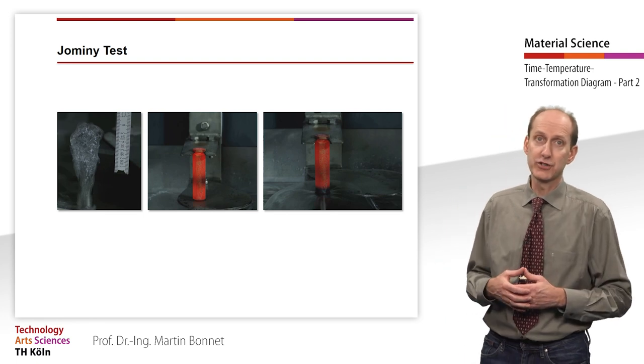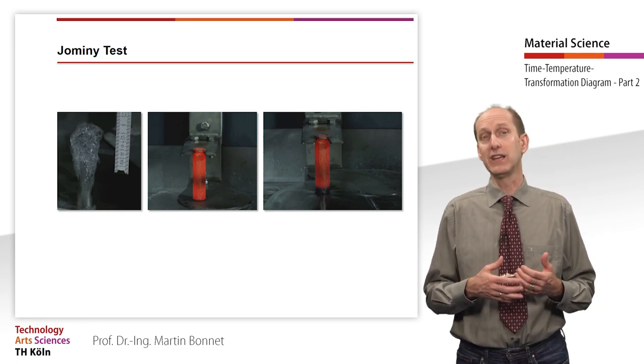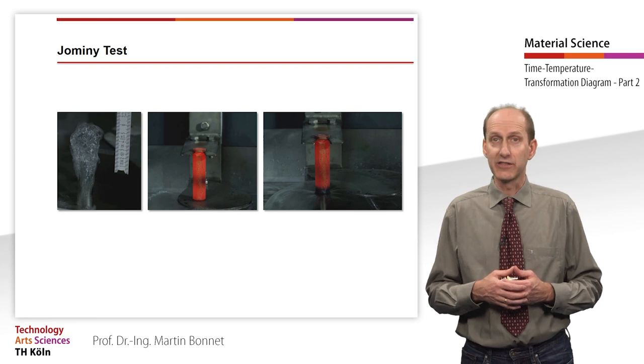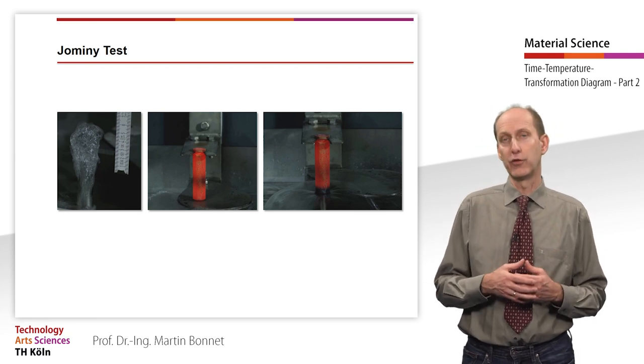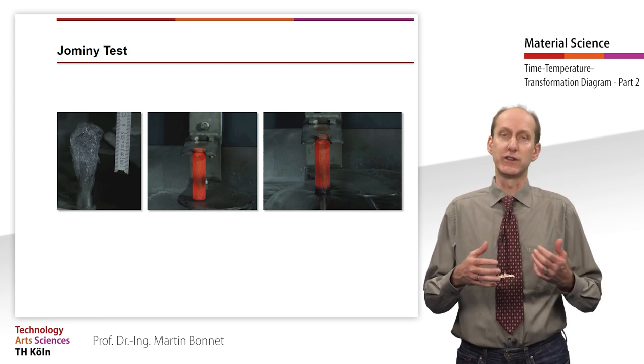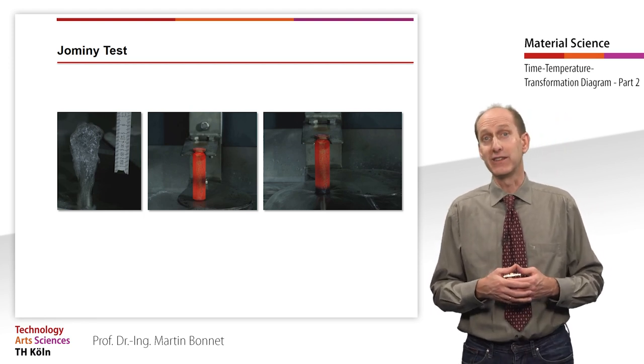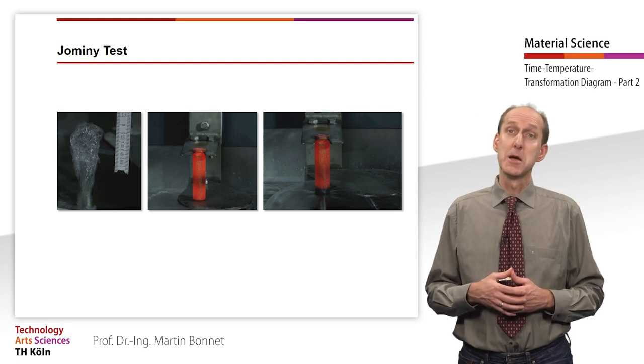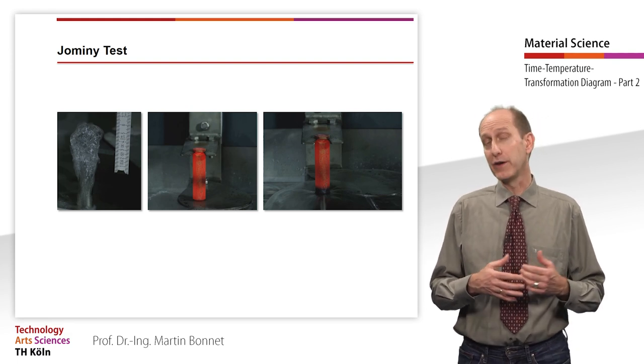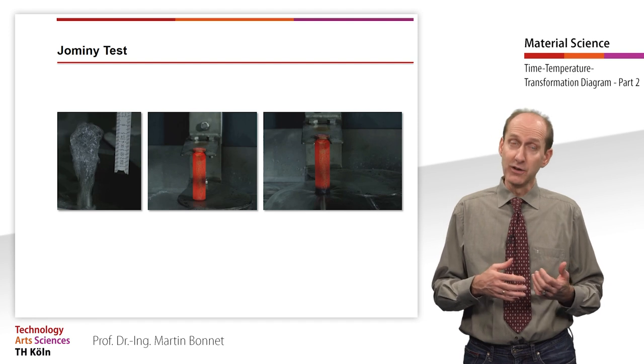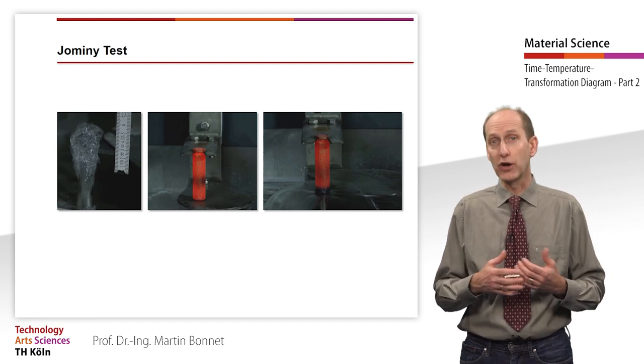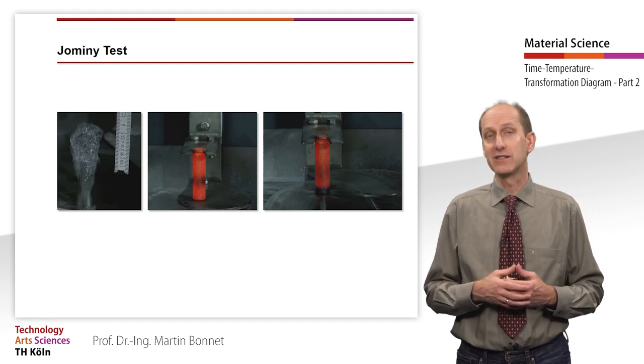After the annealing temperature of the sample has been maintained for 30 minutes, the sample can be taken out of the furnace and hung in the quenching device. The time between taking the sample out of the furnace and the start of the quenching process must not be longer than 5 seconds. Now the sample is cooled at the front side for at least 10 minutes.